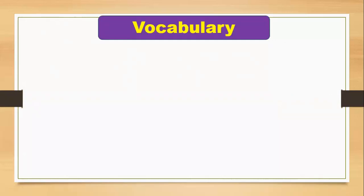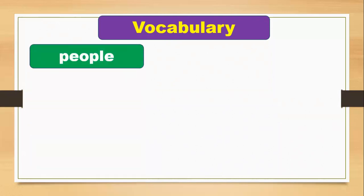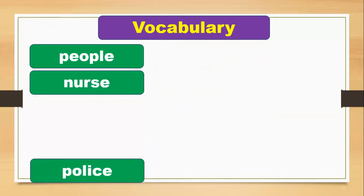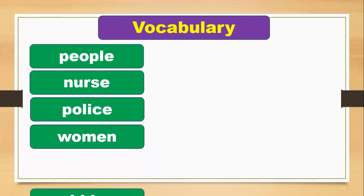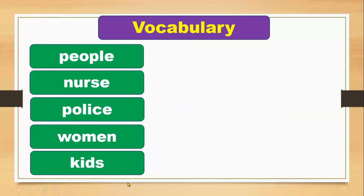Today we reviewed unit two and learned new words: people, nurse, police, women, and kids. These are things you can find in your neighborhood. You can also find supermarkets and malls, and different people — young and old — like police officers, nurses, doctors, and street cleaners. Thank you so much, take care, goodbye.